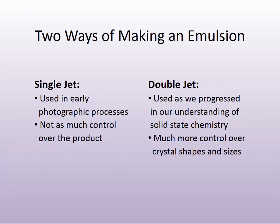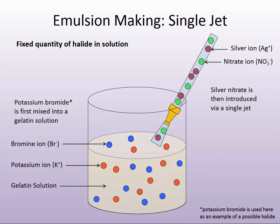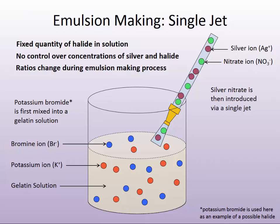Let's go all the way back to the beginning where we talked about two ways of making an emulsion: a single jet and a double jet. Single jet was what was done in the early days, where there wasn't much control, and we progressed with our knowledge of solid-state chemistry into a more double jet arrangement for emulsion-making. In a single jet experiment where we have the halide present in a fixed concentration and we're adding silver, there's really no way to control the ratio of concentrations between silver and halide, and it's constantly changing as the emulsification process is occurring.